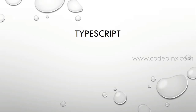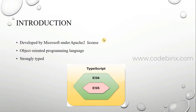So what actually is TypeScript? Who developed it? Microsoft developed it under the Apache 2 license. It is a new programming language developed around 2012. What is the main difference? It is an object-oriented programming language. Obviously if you have studied JavaScript, you want to understand the actual difference between JavaScript and TypeScript.